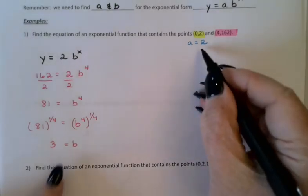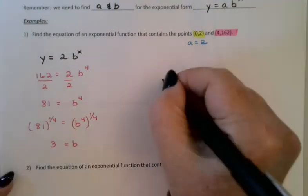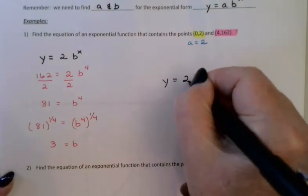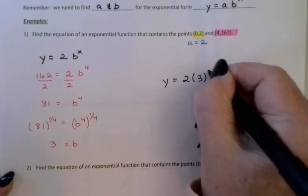Alright. I know a. I know b. My equation then is y equals 2 times 3 to the x.